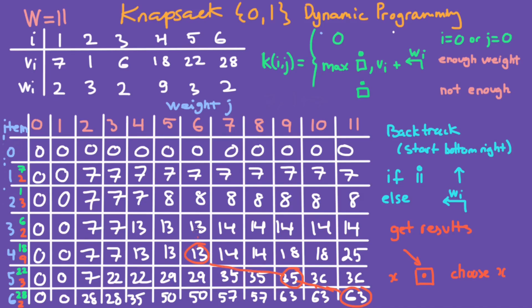The number above is the same here, so we just move up. The next number above is not the same, so the item weight is 2 — we move up and left two times. The number above that is the same so we circle it and move up. The next number above is not the same, item weight is 2, so we move up and left two times, and the backtracking is done.